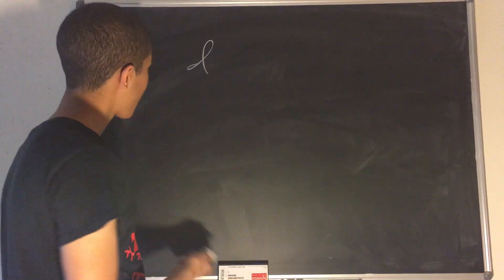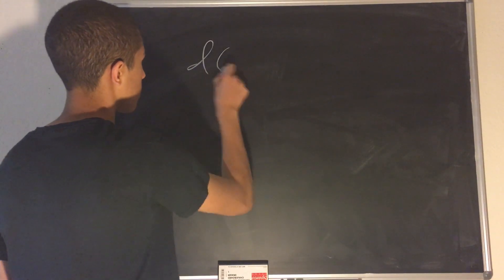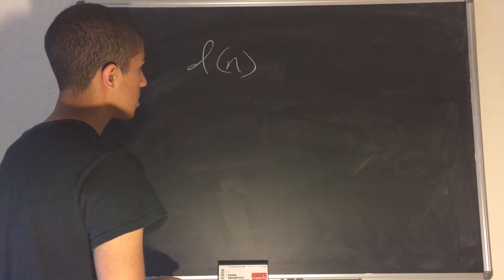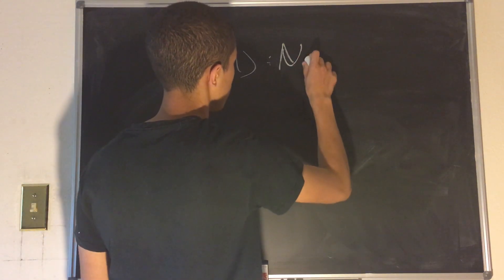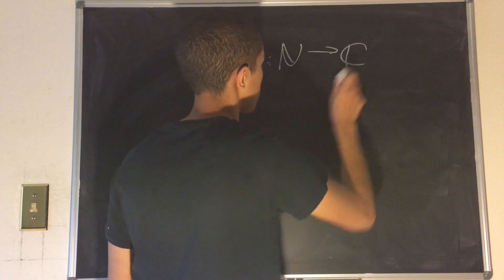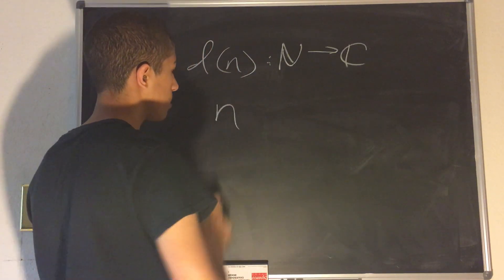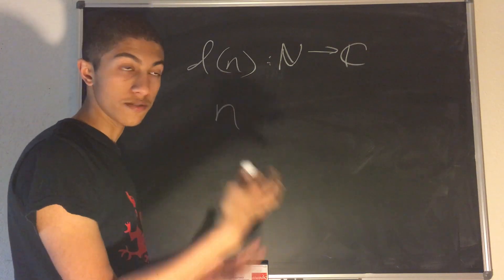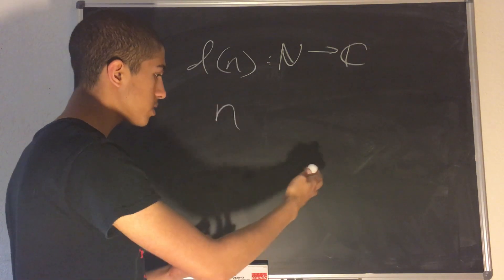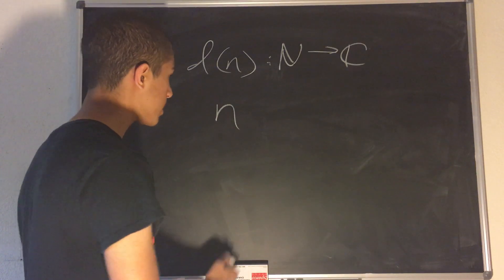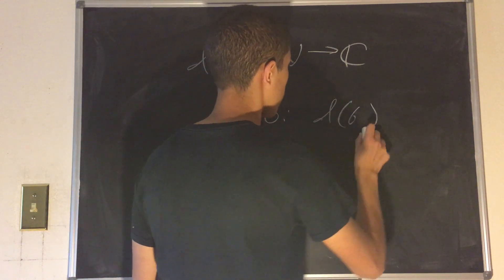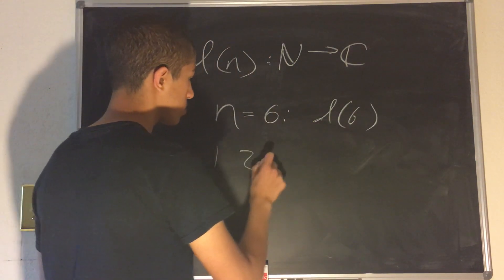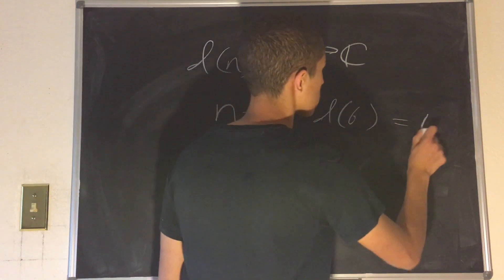Let's begin with the divisor function, called d. It's d(n), where n is our input. d(n) goes from the naturals to the complex numbers, and what it does is take some n and count the number of divisors of n. So if n equals 6, then d(6) — how many divisors does 6 have? One, two, three, and six — that is equal to four.